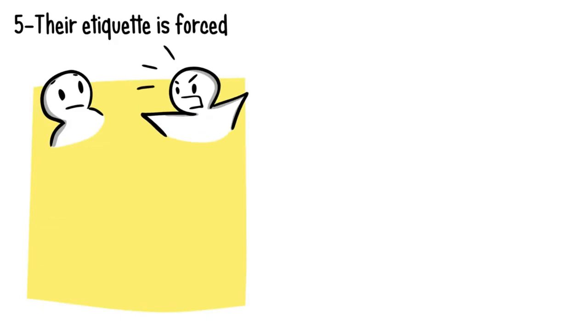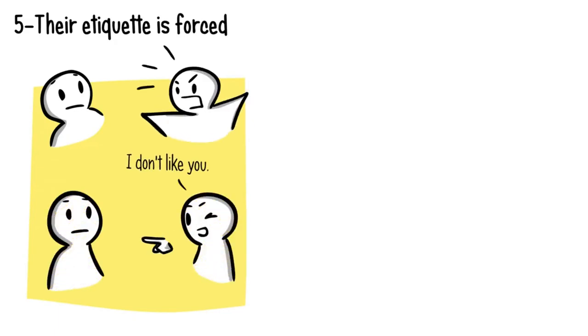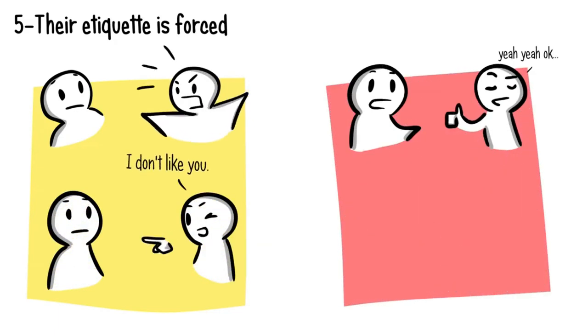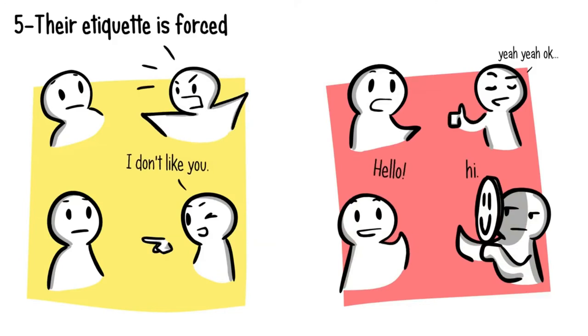Number five, their etiquette is forced. When someone outwardly dislikes you, they will be loud about it, whether it's lashing out on you regularly or telling you to your face. When they secretly dislike you, however, they might try to get along just to avoid conflict. Whether it means forcing a smile or doing things to keep the peace, they will keep the surface clean between you two. Deep down, though, they may think ill of you and display this through their passive-aggressive behavior.